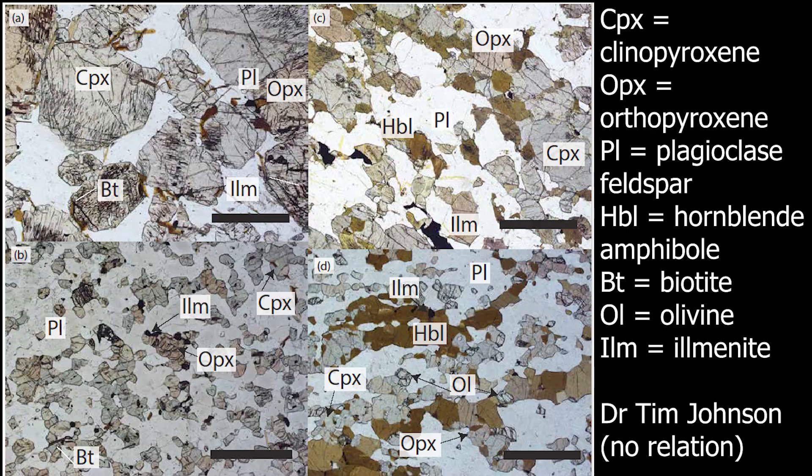In thin section under polarised light, pyroxenes are usually colourless but they can be grey, pale green, or pale brown. Darker colours are associated with iron-rich varieties, which may also be darker brown, pink, or even violet. Pyroxenes have high relief, which means that they appear to stick up out of the slide and they may have a dark line around the edges of them.